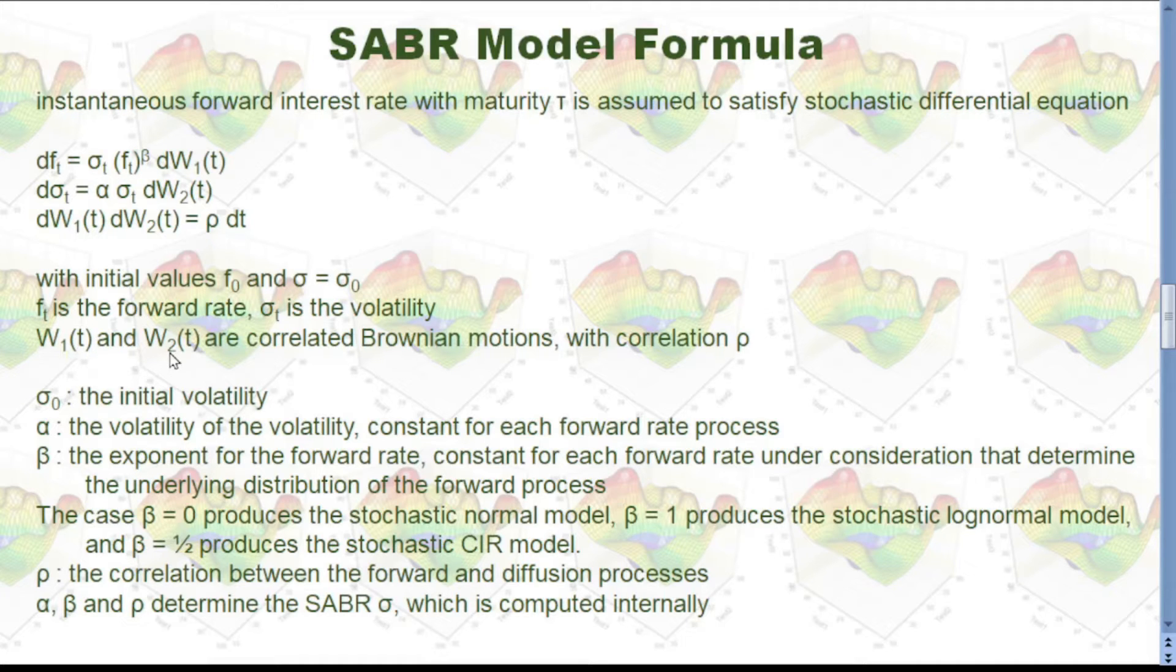The initial value is F0 and sigma 0 is the initial value for sigma. W1 and W2 are correlated Brownian motions with correlation rho. The first formula is talking about this forward rate change, and the second formula is talking about the volatility change.